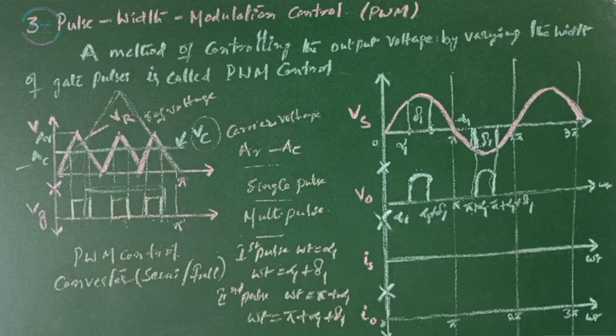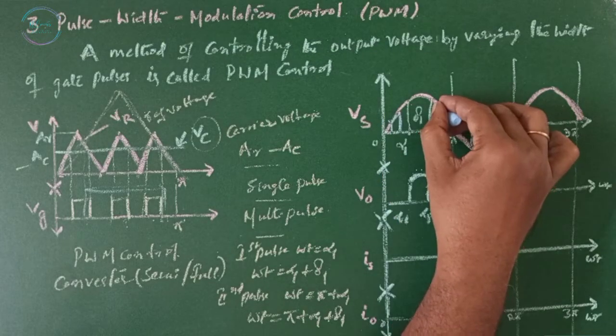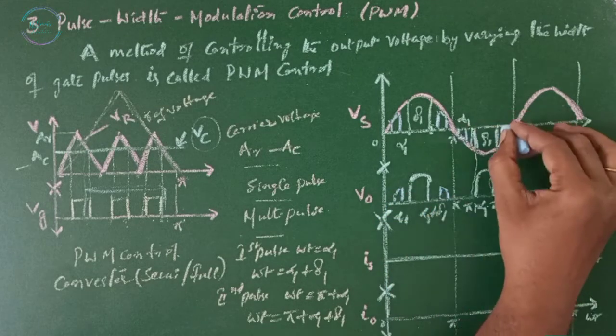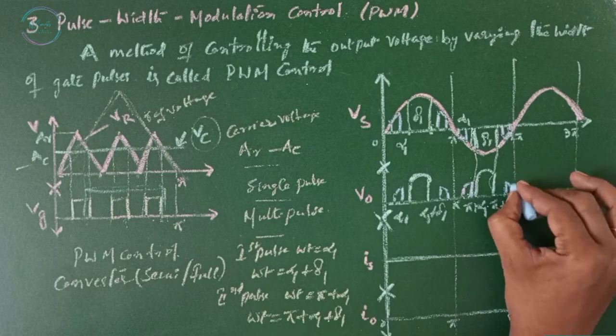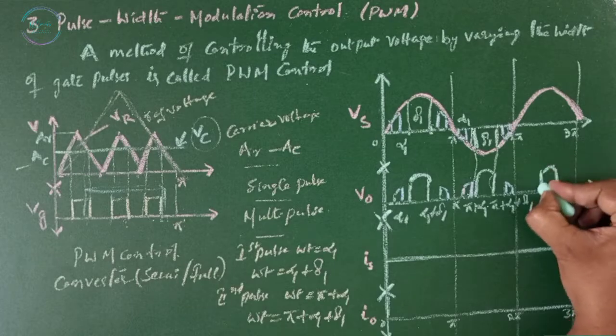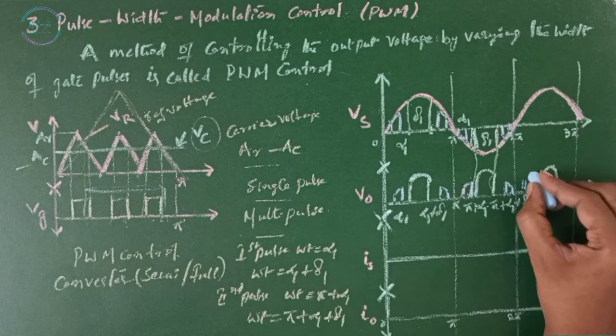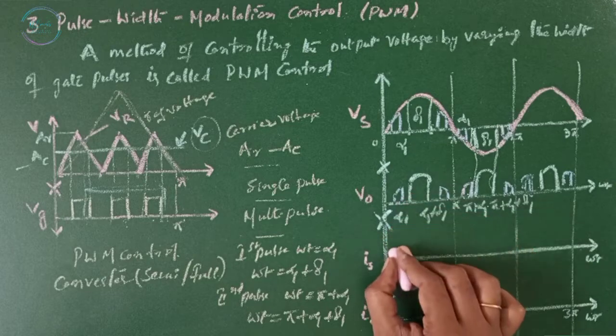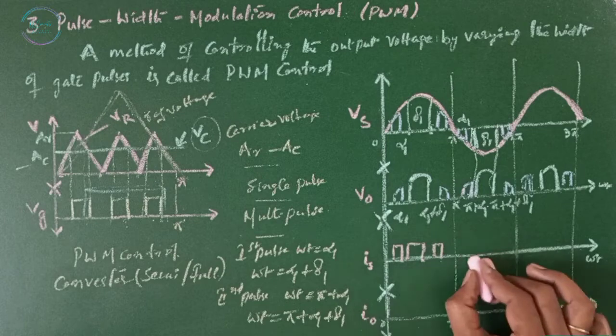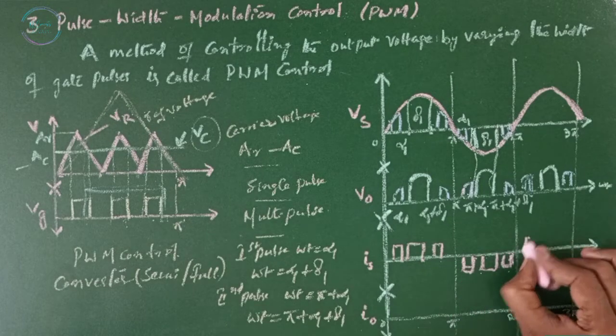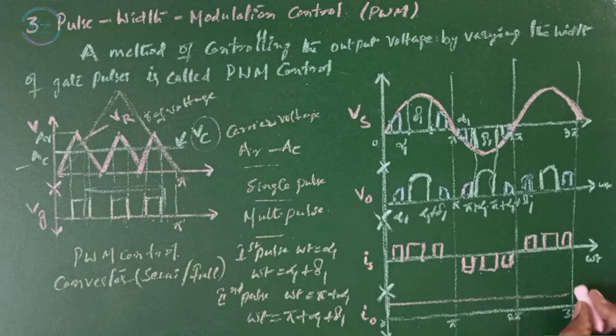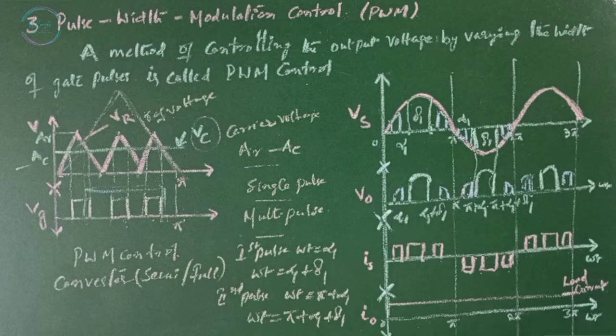Now if you consider more pulses, this will be one more pulse here and one more pulse here, that is three pulses we are considering in a half cycle, then you will be getting three pulses in the output. The same thing is going to repeat after 2pi. This is for single pulse and this is for multipulse. When this is present, the S is also present. Then the load current will be a continuous one. This is my load current.